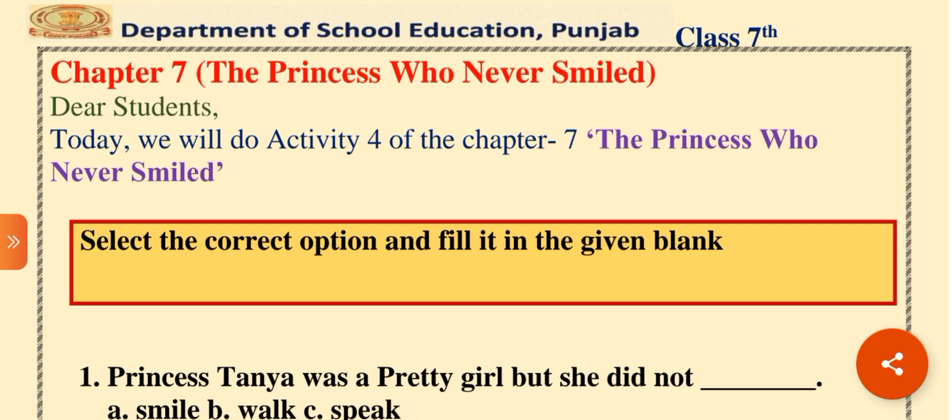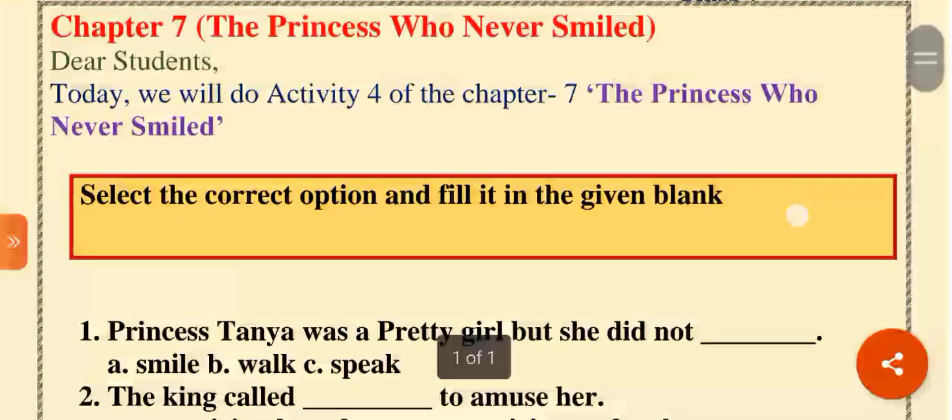So, let's read the assignment sent by Department of School Education Punjab. This is chapter 7, The Princess Who Never Smiled. Let's do activity 4 today.